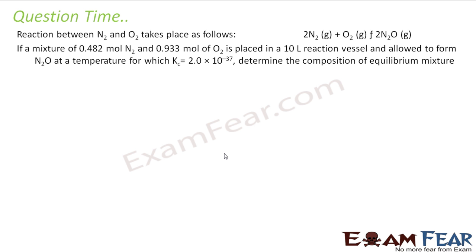So the question says, the reaction between N2 and O2 takes place with this reaction: N2 plus O2 equals 2N2O. And the mixture has 0.482 mol of N2, 0.933 mol of O2 in 10 liter reaction vessel at a temperature for which Kc is given. We have to find the composition of the equilibrium mixture. Two things to note here: first thing is the volume of the flask is 10 liter. Second is, the Kc is very small. Since the Kc is very small, that means you will have more stuff on the reactant side. The product side will have almost nothing.